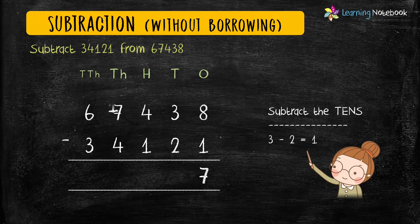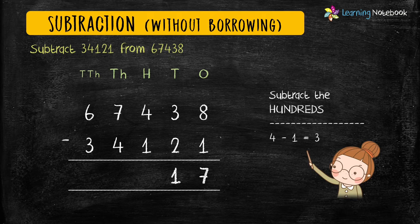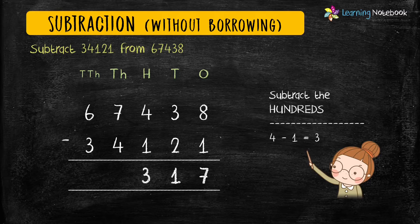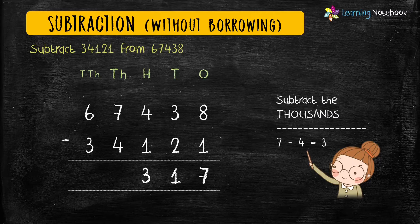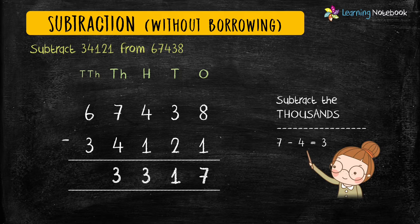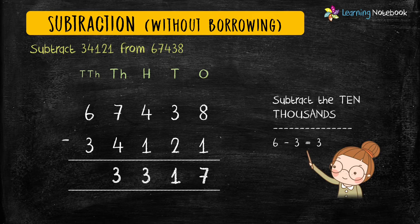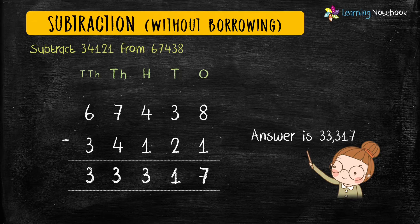3 minus 2 equals 1. Next, subtract the digits at the hundreds place: 4 minus 1 equals 3. Now let's move and subtract the digits at the thousands place: 7 minus 4 equals 3. At the ten-thousands place: 6 minus 3 equals 3. So our answer is 33,317.